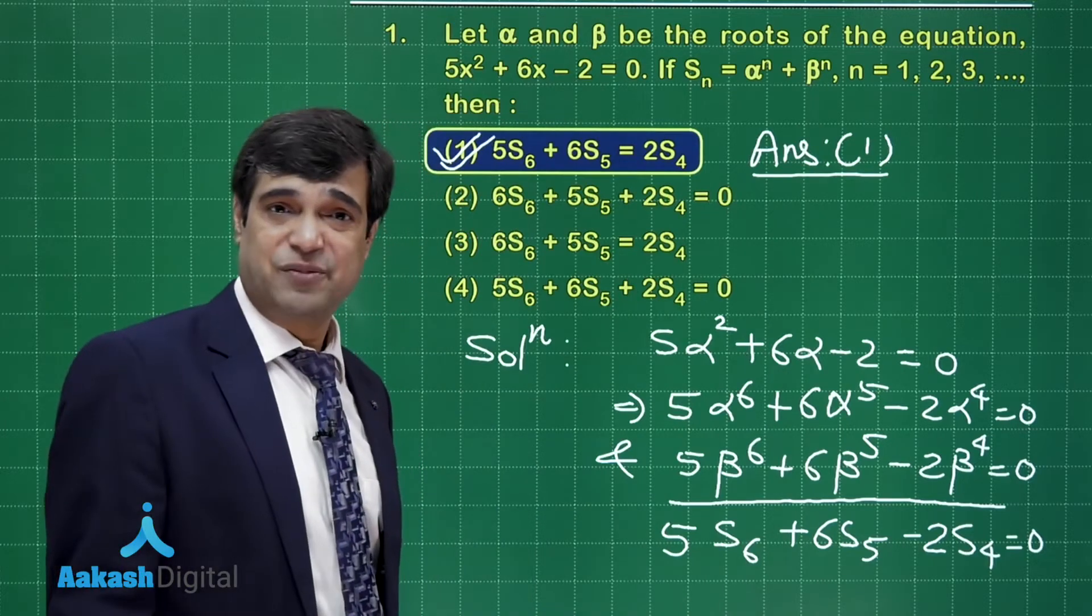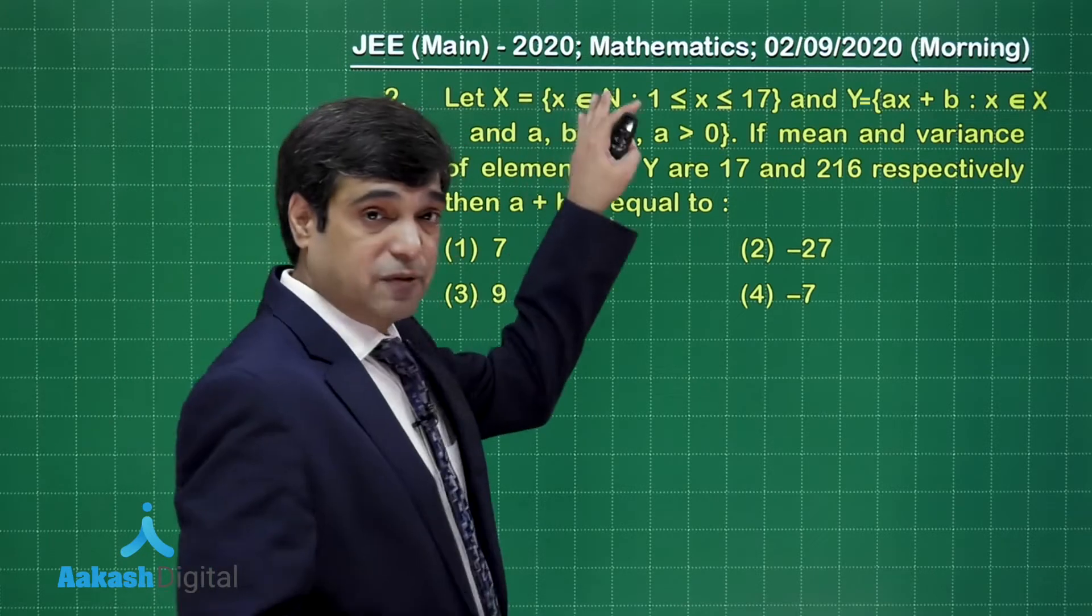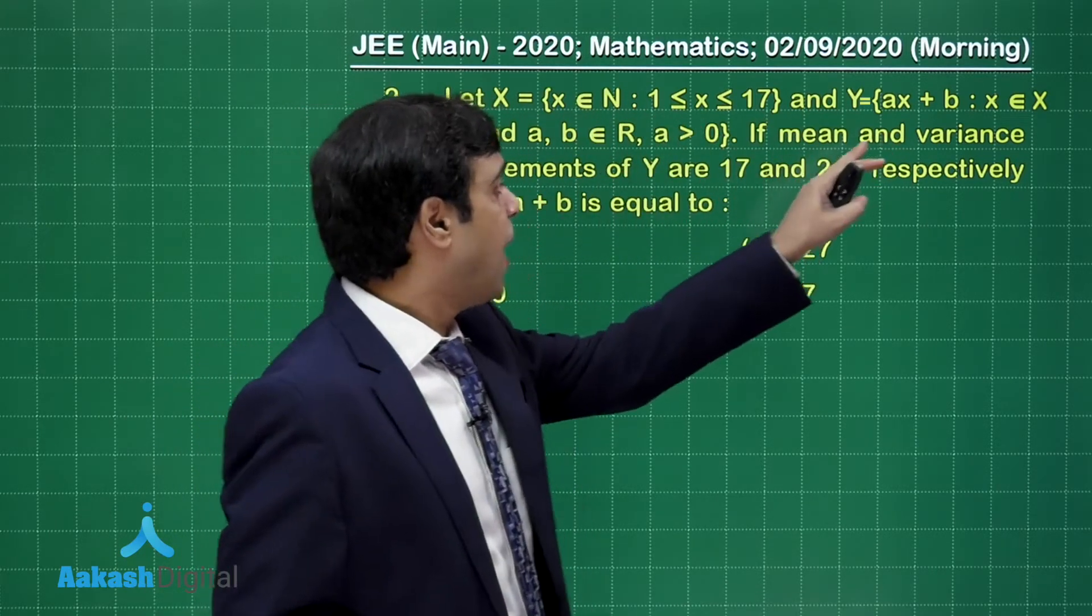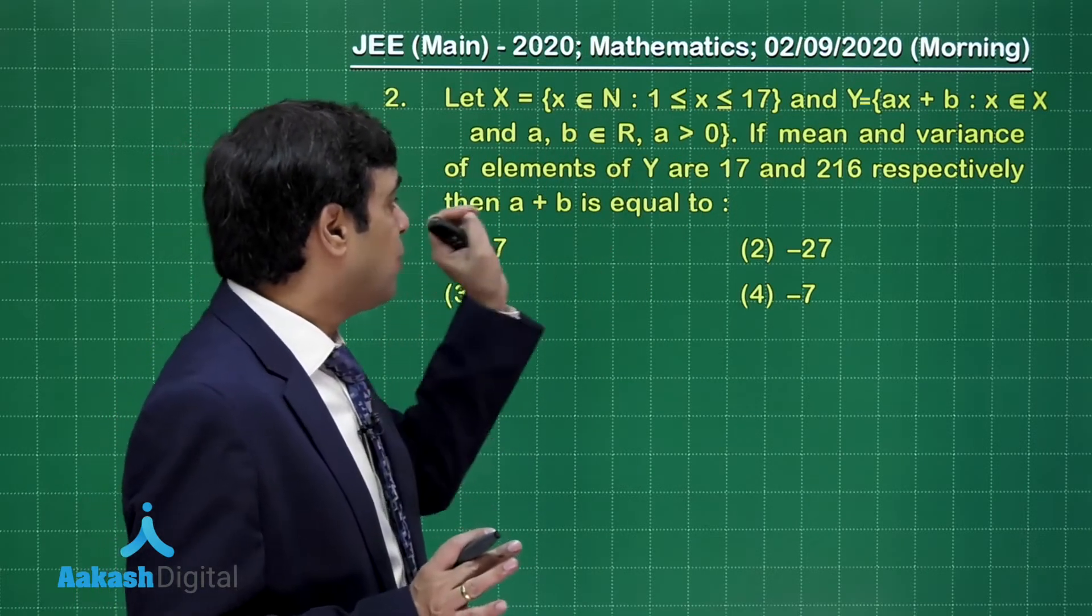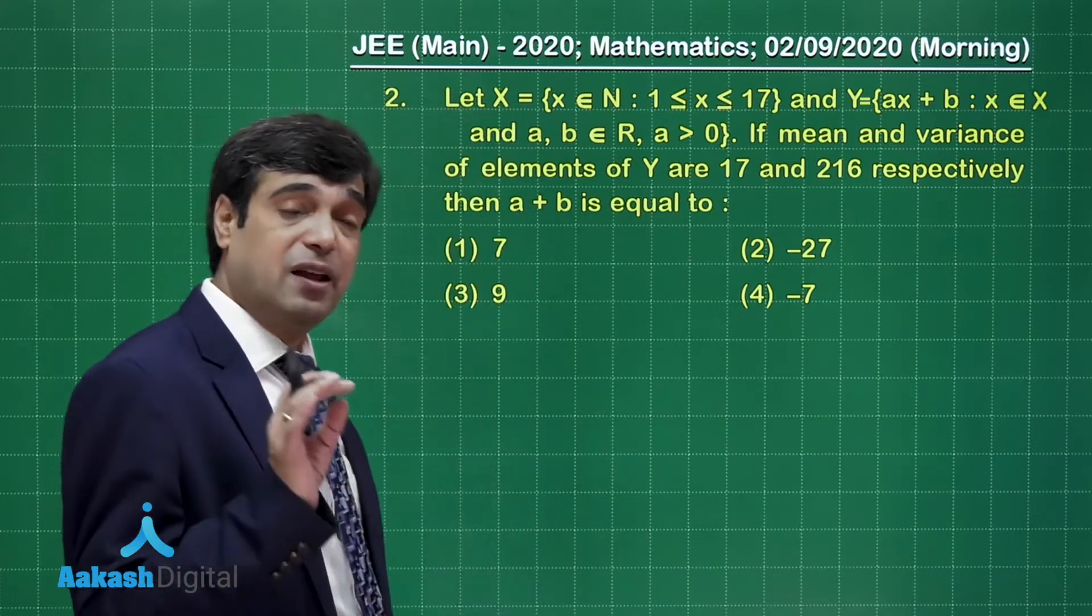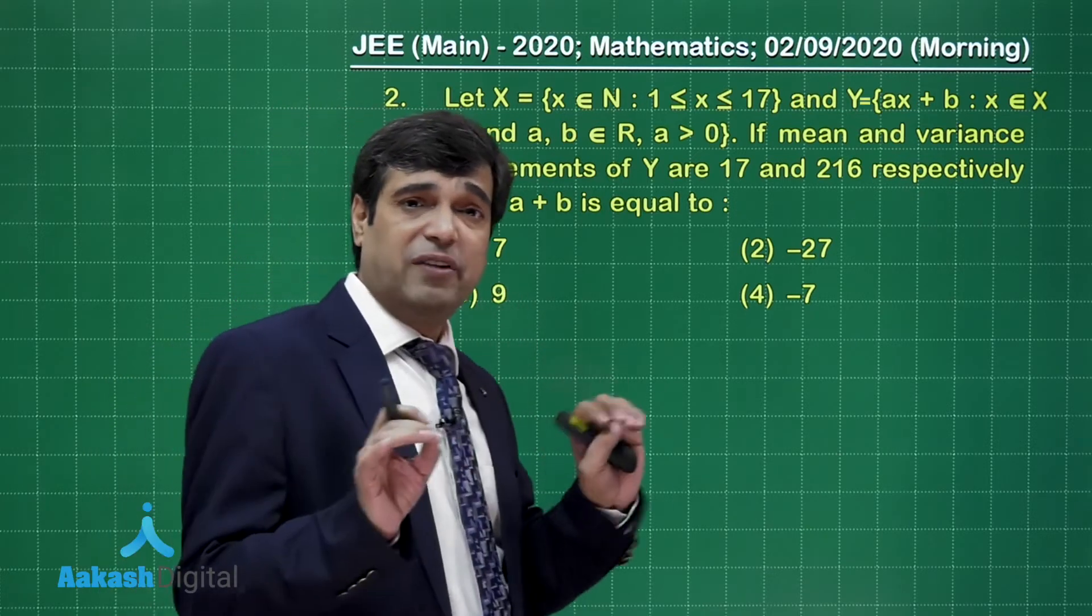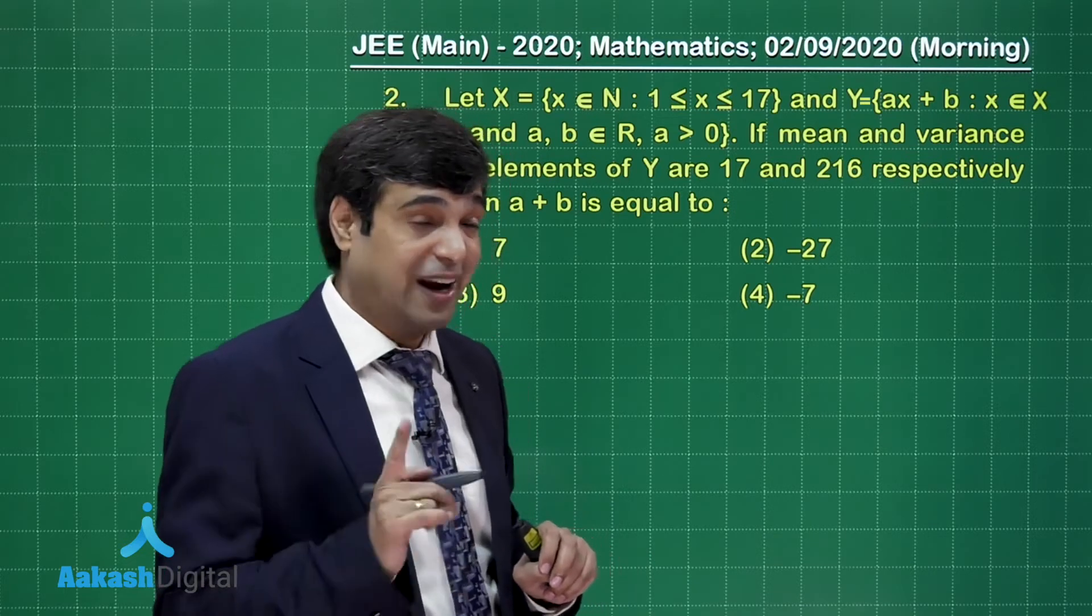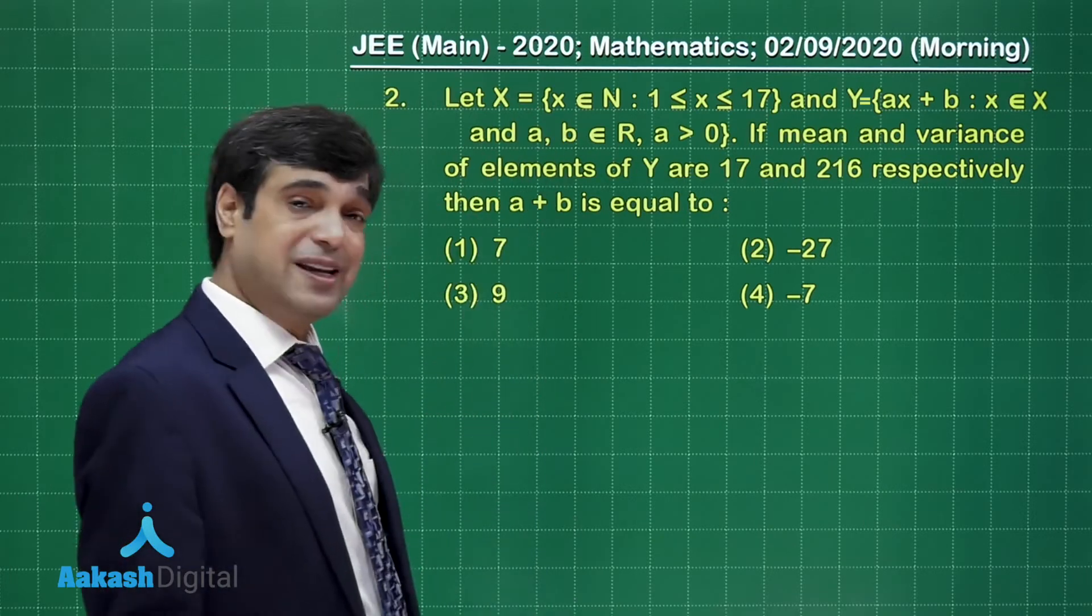Let's move on to the second question. Now let X = {1, 2, ..., 17} and Y = ax + b. If mean and variance of elements of Y are 17 and 216 respectively, then the value of a + b. Now, don't start blindly solving. Use intelligent work. We know Y is somehow related to X.